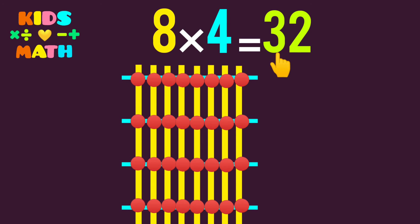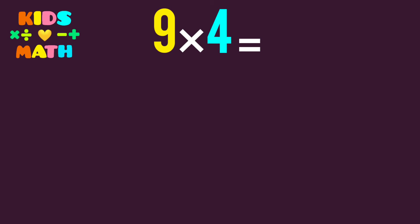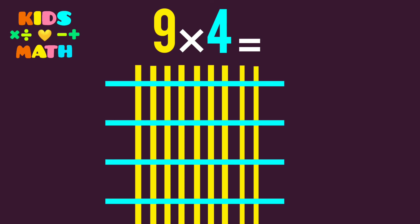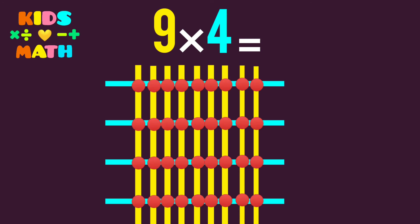The next multiplication: 9 times 4. The first number is 9, so we derive 9 lines. The second number is 4, so we derive 4 lines. Then we count the common points.